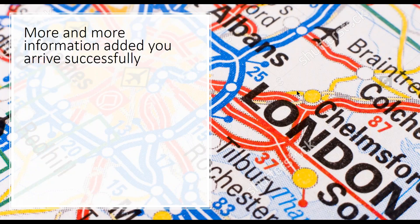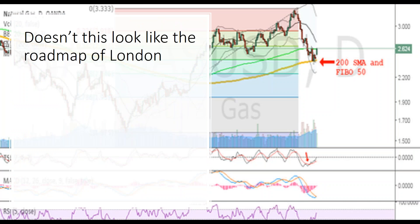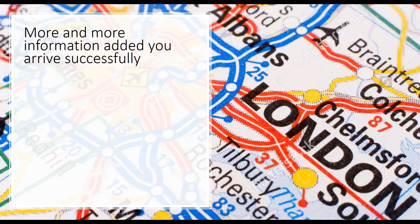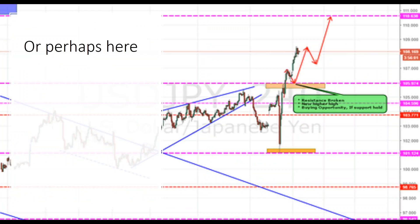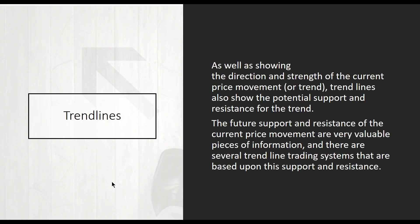The more information you are able to put on this roadmap, the easier your journey will be, the less stress you'll have, and the more likely you'll arrive successfully. If you look at the background, we have a map of London and surrounding areas, and here's a chart of natural gas — it kind of looks exactly the same. A whole bunch of lines going all over the place. But if you know how to use them properly and your eyes are used to using them, you'll be able to interpret them.